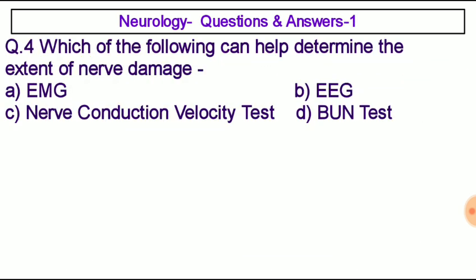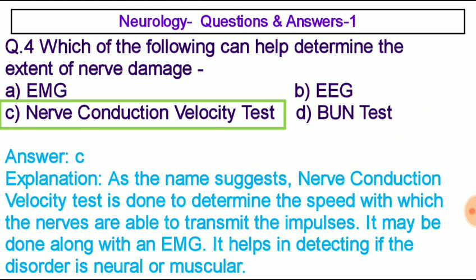Question number four: Which of the following can help determine the extent of nerve damage? Option A: EMG, option B: EEG, option C: nerve conduction velocity test, option D: BUN test. The correct answer is option C, nerve conduction velocity test. As the name suggests, it measures the speed with which nerves transmit impulses. It may be done along with an EMG and helps detect whether a disorder is neural or muscular.